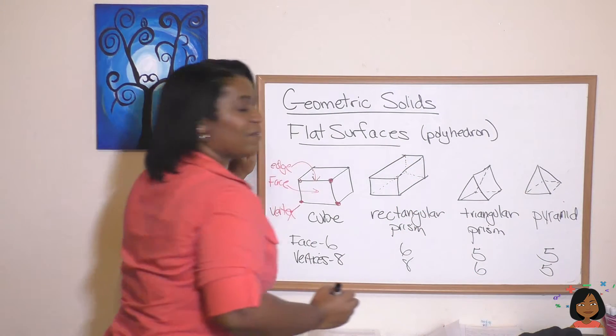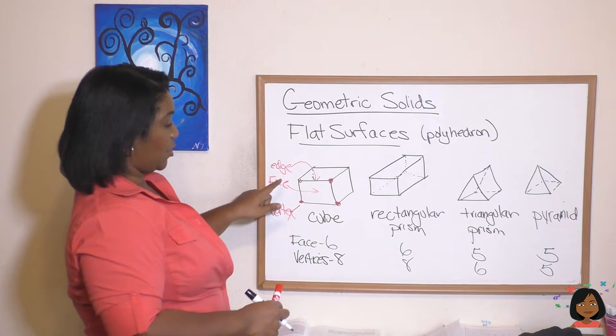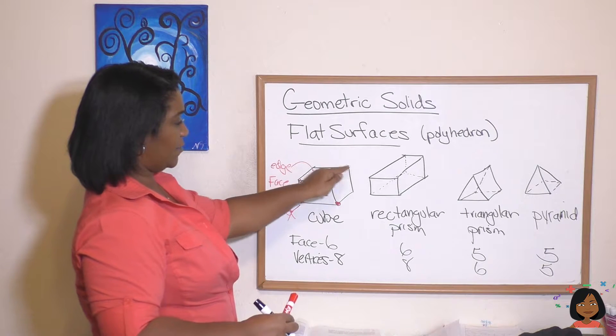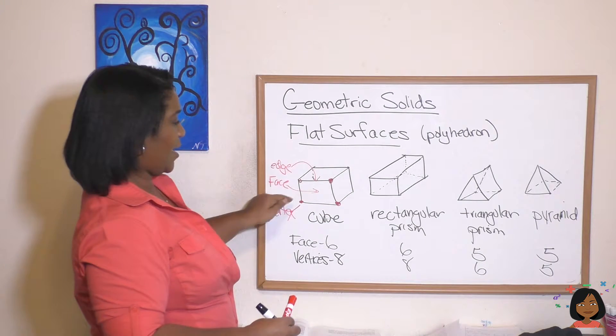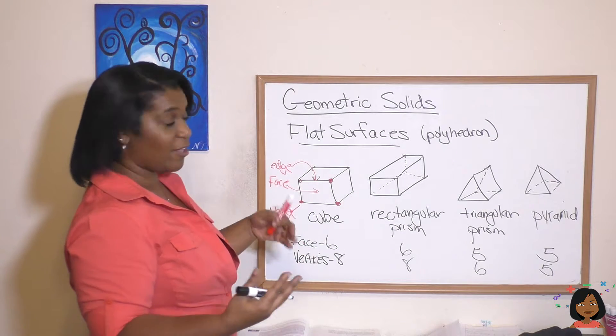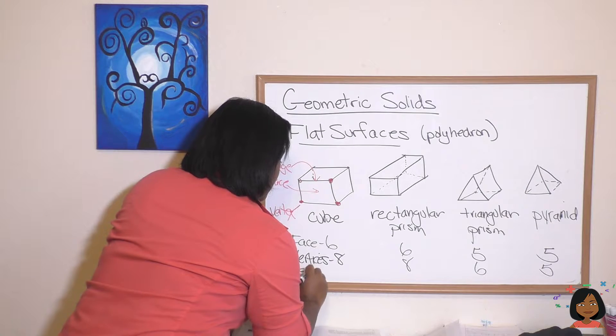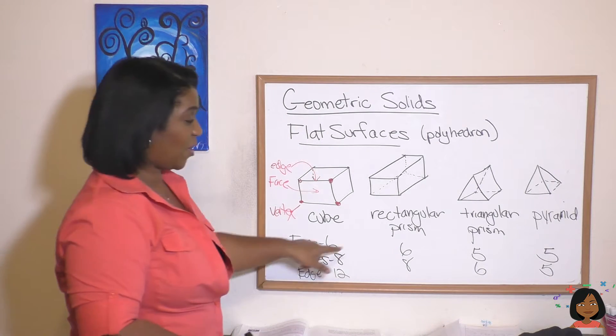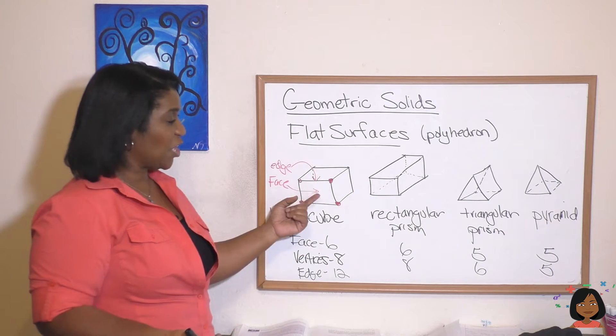What about the edges? So edges of a cube: one, two, three, four, five, six, seven, eight, and then we've got nine, ten, eleven, twelve. Twelve for our cube. And you probably have realized there's a certain pattern going on here. We're going to have twelve as well for our rectangular prism.